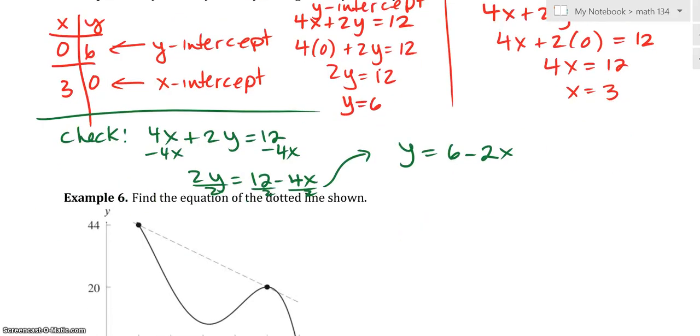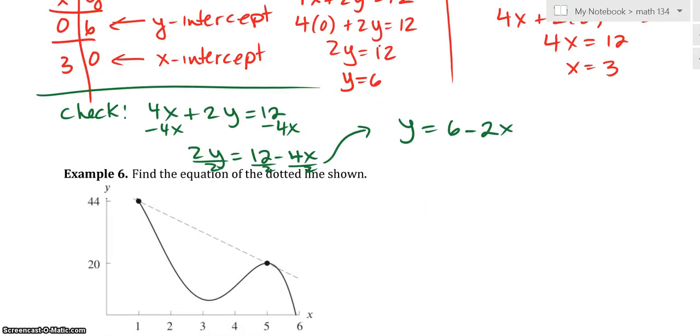Example 6 is on its own. We've done this before, though. This is asking us to find the equation of the dotted line shown. Why don't you pause it since we've done this before. But before we do, let's see. This is the point (1, 44), it looks like. You can use that point. And this point right here is the point maybe (5, 20). So can you find the equation given those two points?